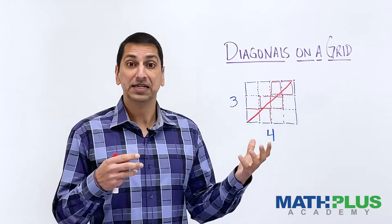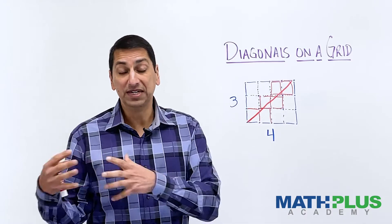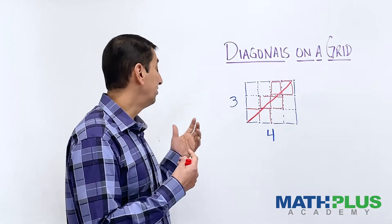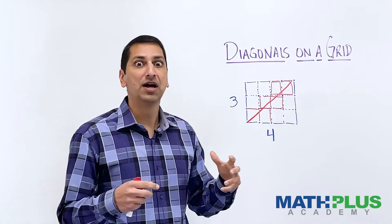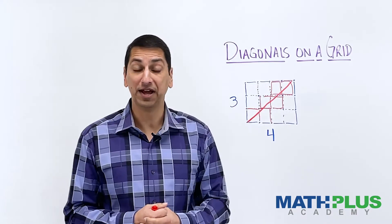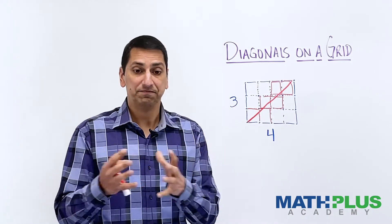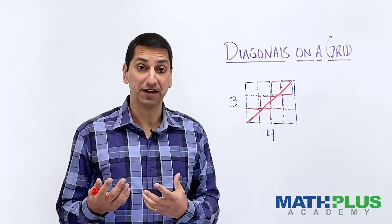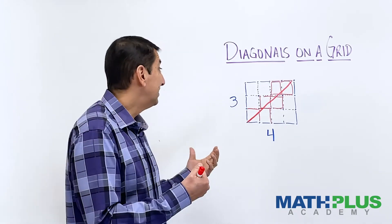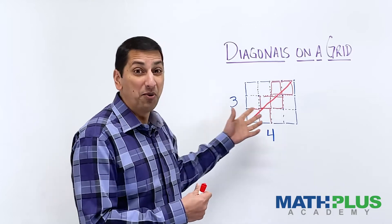Are there certain easy shapes to work with or easier sizes to work with and harder sizes to work with? Are there certain pairs of numbers where you get a lot of these diagonal squares that I've colored in red? Are there certain dimensions where you get very few of them? What's the least you can get? What's the most you can get?